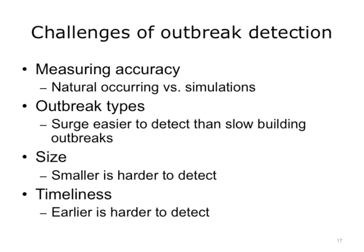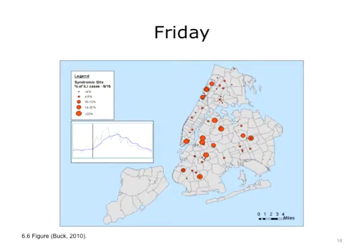For most outbreaks, especially those spread by human-to-human infection, it is more difficult to detect the outbreak earlier when fewer people are infected than later in the outbreak. We will now transition to how the Department of Health utilized electronic health record surveillance during the 2009 H1N1 pandemic in New York City.